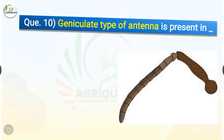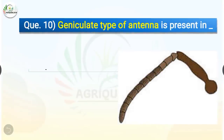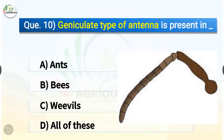Question number 10. Geniculate type of antenna is present in which insect? The options are ants, bees, weevils, or all of these. The correct answer is option D, all of these. Geniculate type of antenna is present in all three: ants, bees, and weevils.